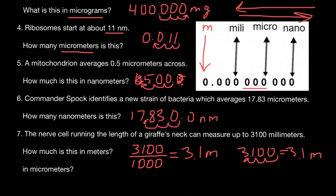How much is 3,100 millimeters in micrometers? We're moving from milli to micro, moving to the right, so we move the decimal point three places to the right — one, two, three. We add zeros and get 3,100,000 micrometers.